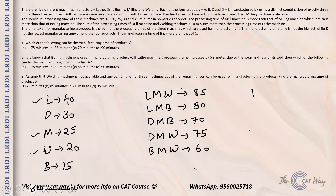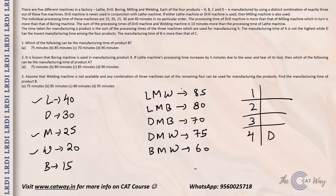Applying the ranking conditions: D has the lowest manufacturing time, so D gets 60 minutes. A is not the highest. B is greater than C. This gives two possible arrangements: either C is second and A is third with B highest, or C is third and B is highest with A in second place. So B must have the highest manufacturing time.